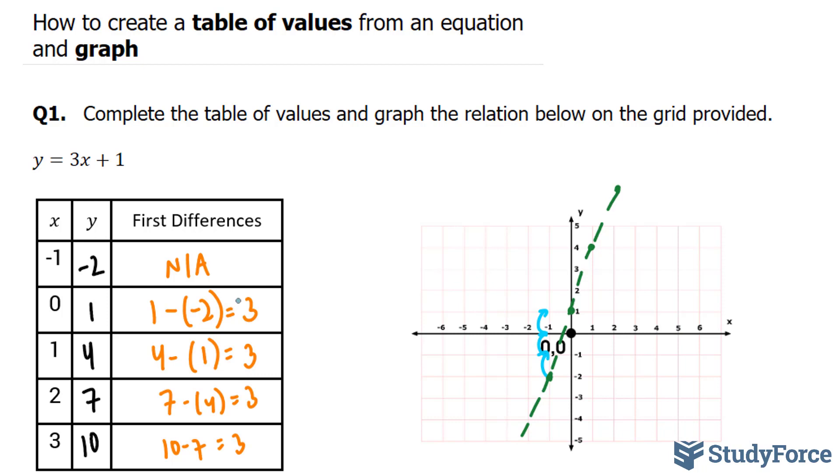And if you notice, that number 3 represents the first differences. So the first differences help us to know what the slope is for the line. This number right here represents our slope. And also take a look, we could have even extracted this information from the equation itself, where we had y is equal to 3x plus 1.